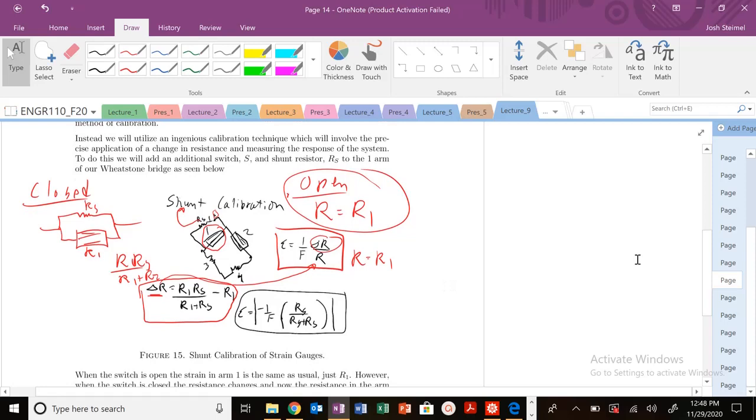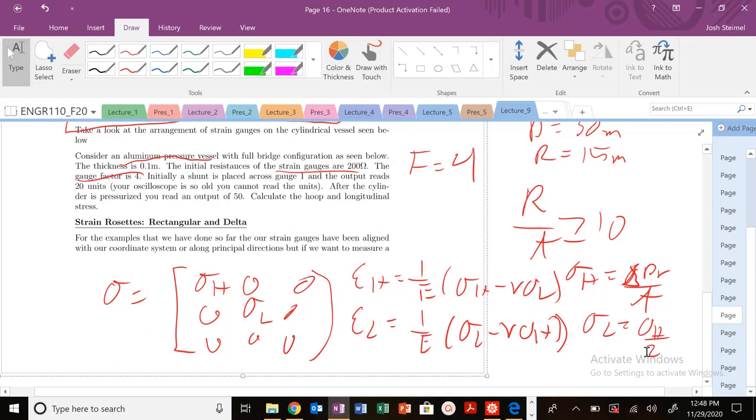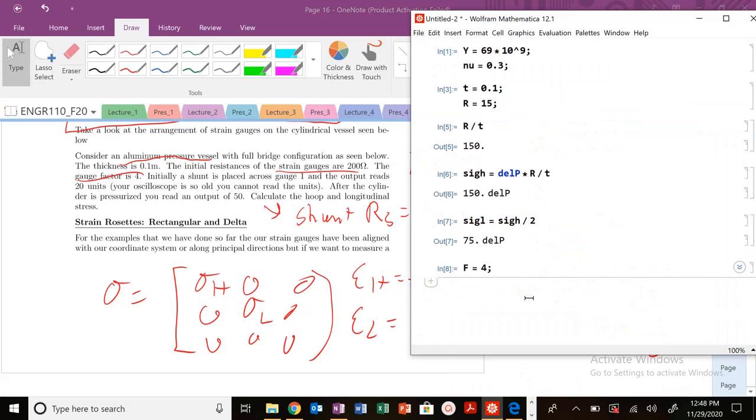Let me go back over here. This is hearkening back to this idea here. We have the calibration idea, right? We had this shunt resistor. In this problem, there's a little typo here. We place a shunt. So our shunt resistor RS is going to be equal to 500,000 ohms.